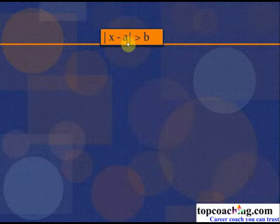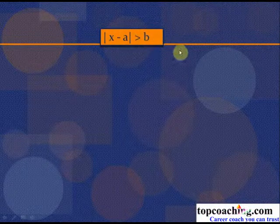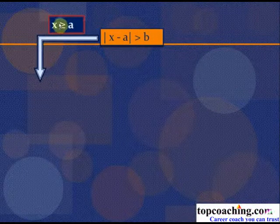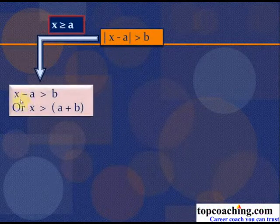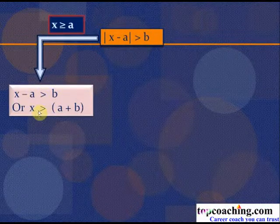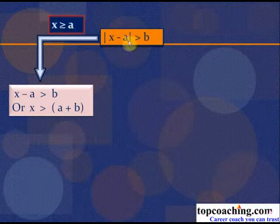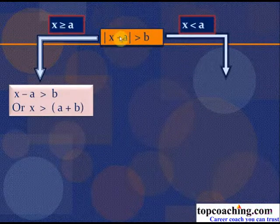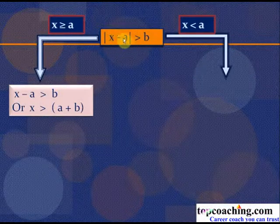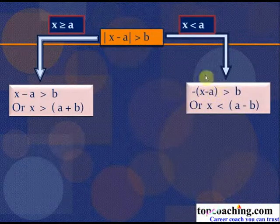For the inequality |x − a| > p: when x ≥ a, the quantity is positive, so the inequality becomes x − a > p, giving x > a + p. When x < a, the quantity is negative, so |x − a| = −(x − a), and the inequality becomes −(x − a) > p.